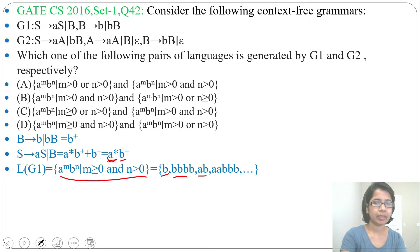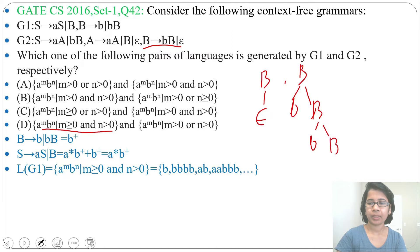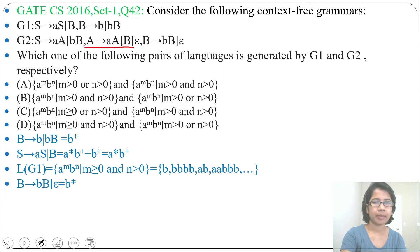This language is present in option D. Now let's analyze Grammar 2. From B, what can you generate? From B you can generate epsilon, then BB, and from each B again BB or epsilon. So the regular expression for B is B Kleene closure — minimum you can generate epsilon, then any number of B.